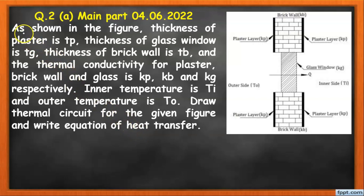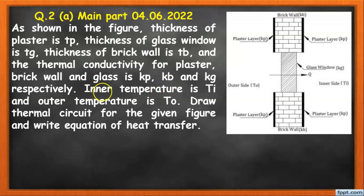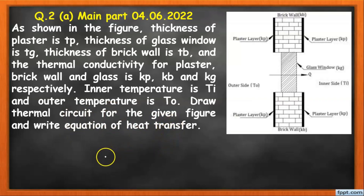The data given is as shown in the figure: the thickness of plaster is tp, the thickness of glass window is tg, the thickness of brick wall is tb, and the thermal conductivity of plaster is kp, the glass is kg, and the brick wall is kb respectively. The inner temperature is Ti and the outer temperature is To. We need to draw the thermal circuit and write the equation of heat transfer.